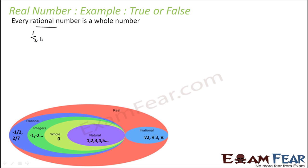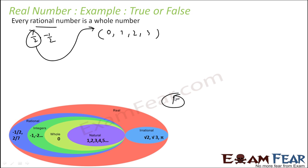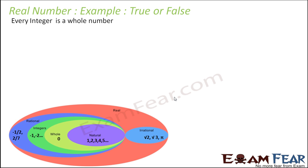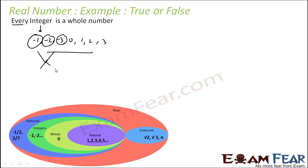Is every rational number a whole number? Rational numbers include 1/2 and minus 1/2; whole numbers are 0, 1, 2, ... Since 1/2 is a rational number but not a whole number, this statement is false. Is every integer a whole number? The integer set includes minus 1, minus 2, minus 3, 0, 1, 2, 3. Since minus 1, minus 2, minus 3 are not whole numbers, this statement is false. If you change it to 'some integers are whole numbers,' that is true because 0, 1, 2, and 3 are whole numbers.